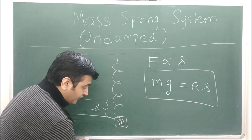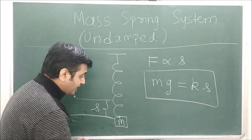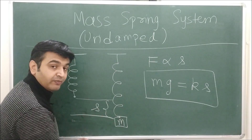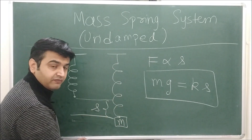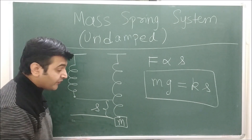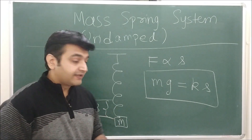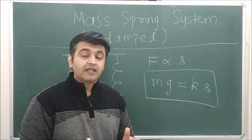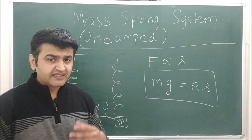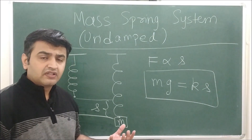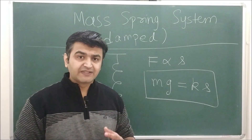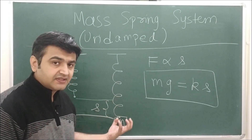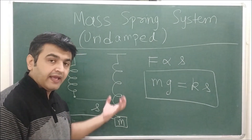Now what we do is pull this object downwards with some velocity and release it. It will then go up, down, up, down — we have oscillations. There can be two cases: either these oscillations keep going because there is no air resistance, no dashpot. A dashpot is something that ultimately reduces the oscillations to zero.